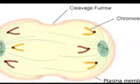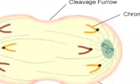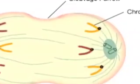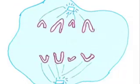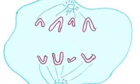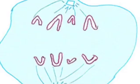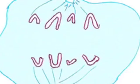In anaphase, the chromosomes move toward opposite poles as the microtubules push and pull apart, while the kinetochores hitch a ride along the spindle fibers.